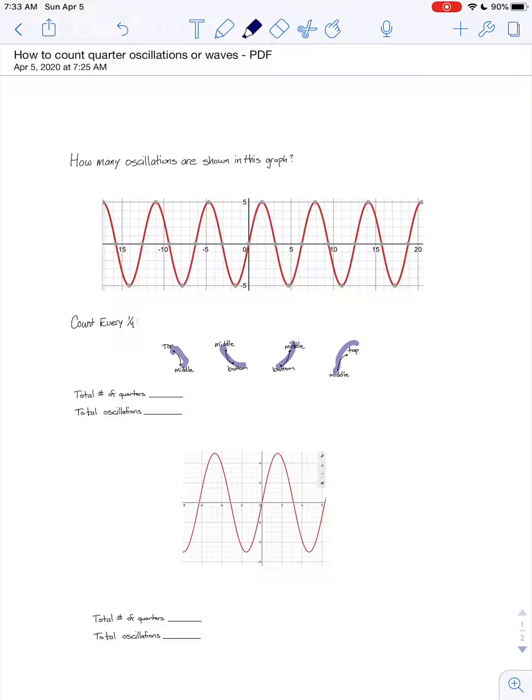So here we go. So we count 1 quarter, 2 quarters, 3 quarters, 4 quarters for 1, 5, 6, 7, 8, 9, 10, 11, 12.